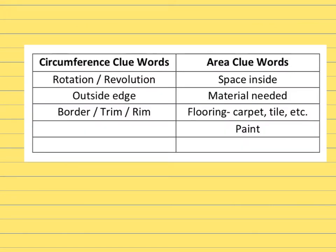So in order to determine if you're going to do circumference or area when you're looking at a story problem or a real-life object, here are some clue words that tell you which one to do. If something is going to make a rotation, that's going to spin around. A revolution is also another word for that. If we're looking at the outside edge of something, that would be the circumference or the perimeter. If we had something with a border, some trim, the rim of a cup or glass, a picture frame, something like that, we would always want to be doing circumference.